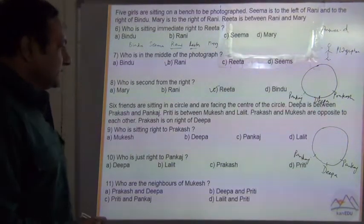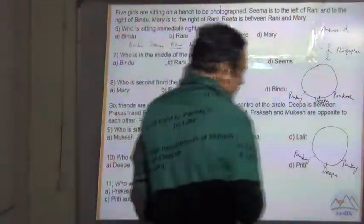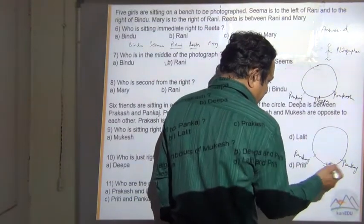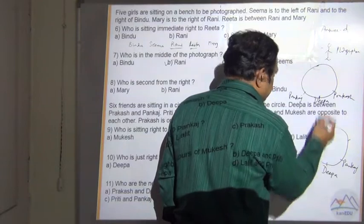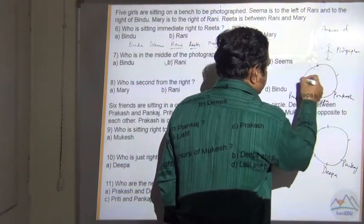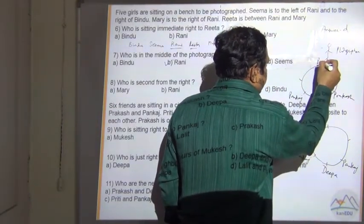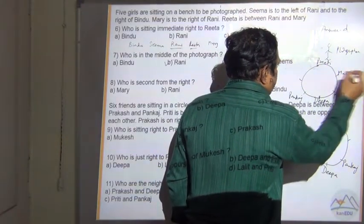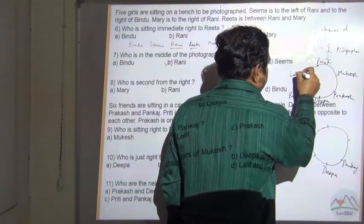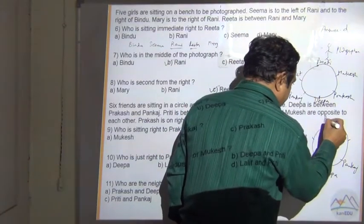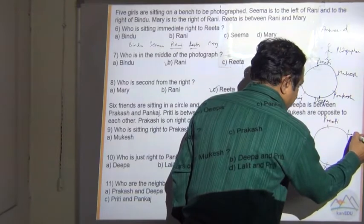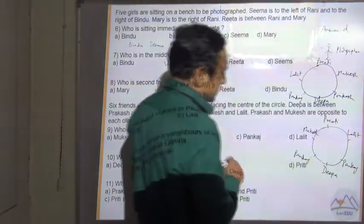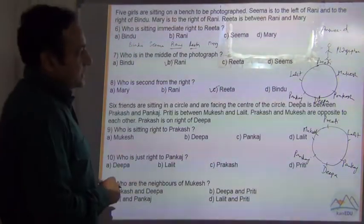Preeti is between Mukesh and Lalit. So Preeti is between Mukesh and Lalit — giving us the combinations for both groups.